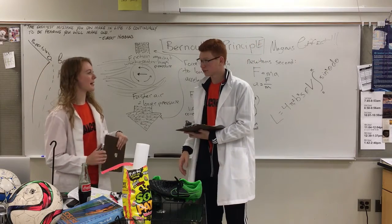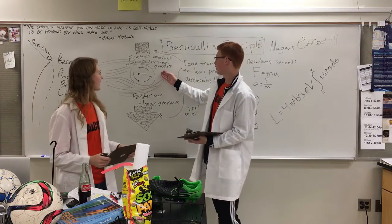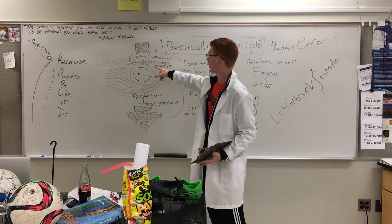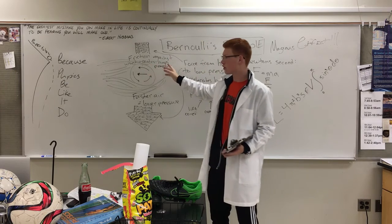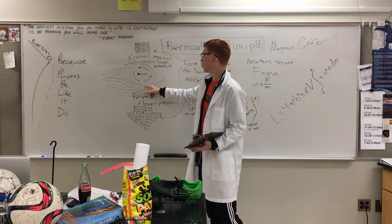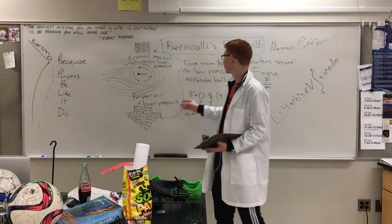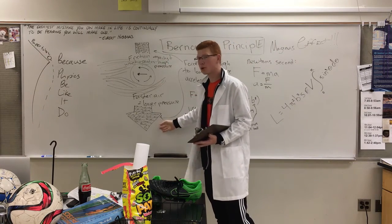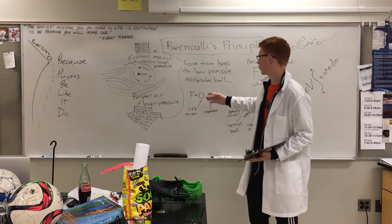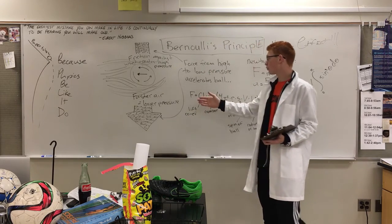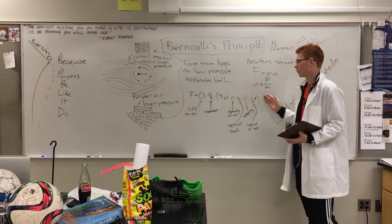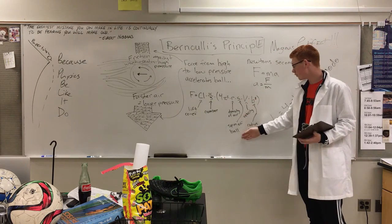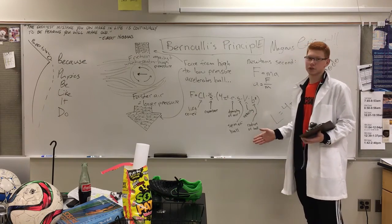Can you give me a recap of Bernoulli's principle? So, as we can see here, the ball is moving towards the left with a counterclockwise rotation. The ball's motion against the wind on the top creates a high pressure zone, and the ball's motion with the wind creates a low pressure zone on the bottom. And as we know, force moves from high to low pressure, which means there's a force — noted by this arrow — downwards on the ball, which accelerates the ball. Now, this force is determined by this equation here, which depends on the lift coefficient, the density of the air, the spin of the ball, the velocity of the ball, and the radius of the ball.